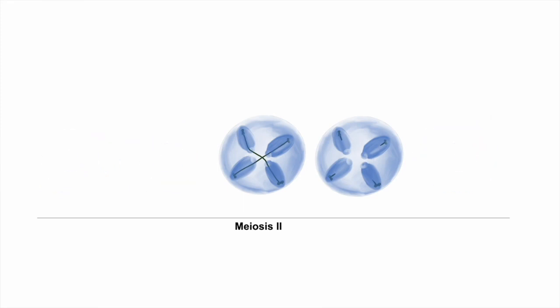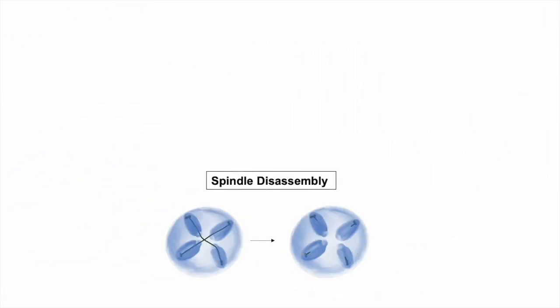Let's zoom in on spindle disassembly. This process requires two pathways that use meiotic-specific proteins, the kinase SPS1, which acts downstream of CDC15, and the meiotic activator of the anaphase promoting complex, AMA1. How these proteins regulate disassembly and how they act to promote spindle disassembly was unknown.